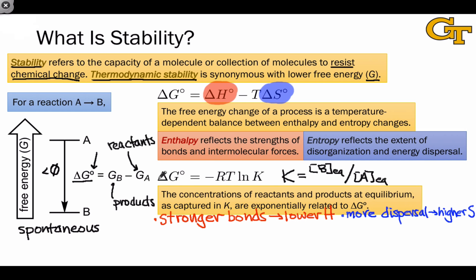This equation helps us see that if delta G is negative, that means that K must be greater than 1, and in that case B, the product, is more stable than A. It's present in greater amounts at equilibrium.